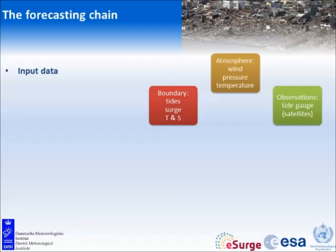To get a storm surge forecast, you need to start with some input data for your model. You need atmospheric data input from a numerical weather prediction — specifically wind and pressure, and in most cases temperature and perhaps other parameters. You also need good boundary conditions, since most likely you'll be working on a regional domain. On the boundary you'll need tides, but also a surge component if a surge can come from outside your domain and travel into it, plus temperature, salinity, and maybe velocities. It's also good to have observations in your area, from tide gauges or satellites.